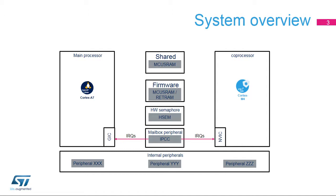Two internal memory regions are shared between the master and the slave processors. These memories are used to load and execute the coprocessor firmware, but also to define common structures like shared buffers for interprocessor communication.